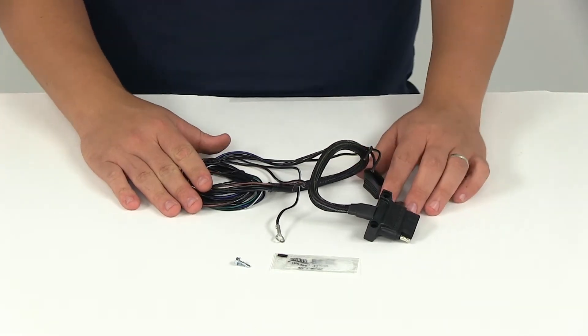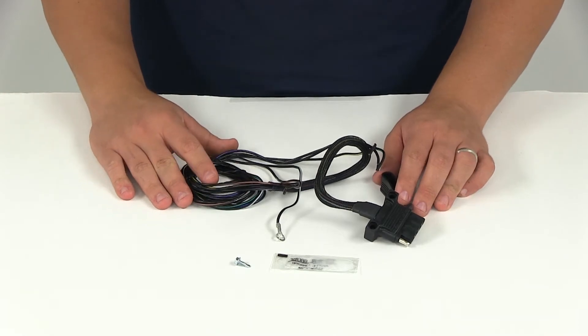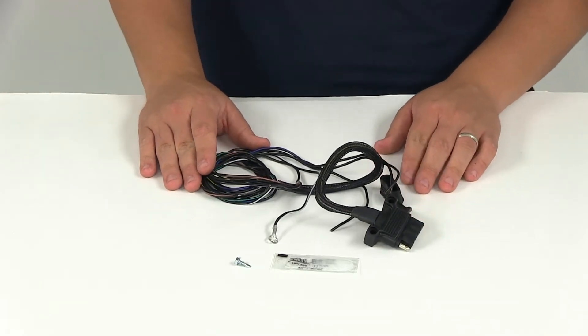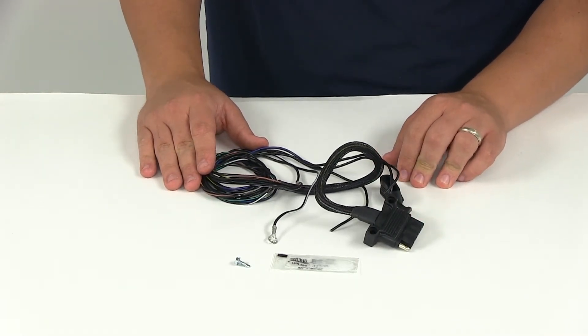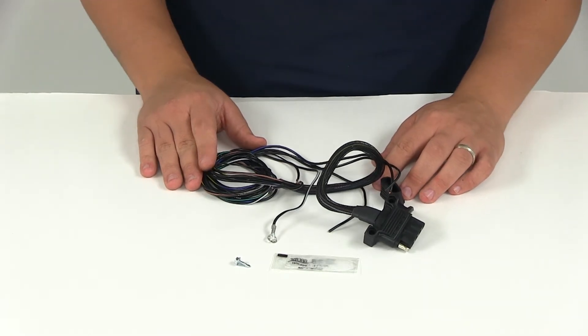The five-way flat connector is found on most newer boat trailers that have hydraulic brake systems. The fifth wire ties into the reverse lights on your vehicle so that a signal can be sent to your hydraulic brake actuator to disengage whenever the tow vehicle is put into reverse.